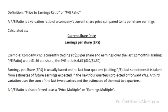Generally speaking, a PE ratio of 15 or lower is considered good, while a PE ratio of 20 or more is considered overbought.